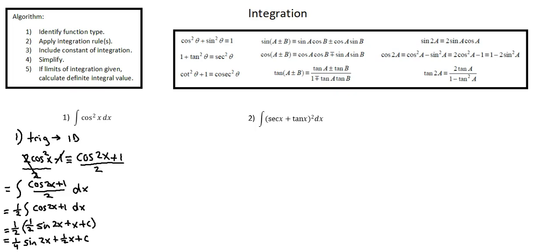And now example 2: the integral of (sec x + tan x)² with respect to x. Step 1: identify function type. I know this is a trig function. I'm not sure whether I'll need to apply an identity, so I'll begin by expanding. sec x × sec x = sec²x; sec x × tan x = sec x tan x — we'll have 2 of those, giving plus 2 sec x tan x; and tan x × tan x = plus tan²x, with respect to x.